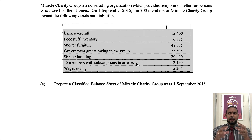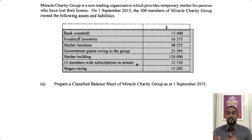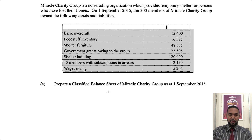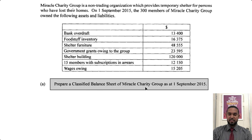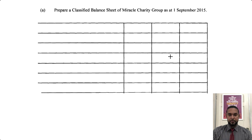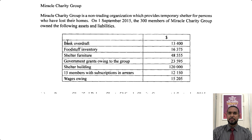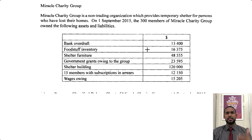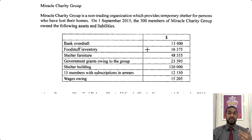For those of you doing the CSEC syllabus, you don't have to know about doing a subscriptions account. But long story short, subscriptions are like membership fees that the members of the nonprofit organization have to pay to stay a member of the group. That is actually their major source of revenue, that and fundraisers. The question wants us to prepare a classified balance sheet of Miracle Charity Group as at 1 September 2015. I am going to use a single column approach to keep things in line.